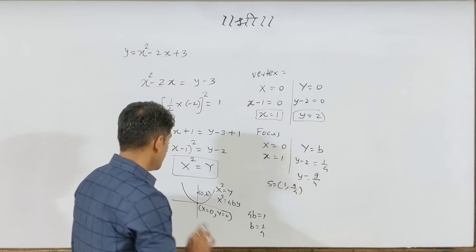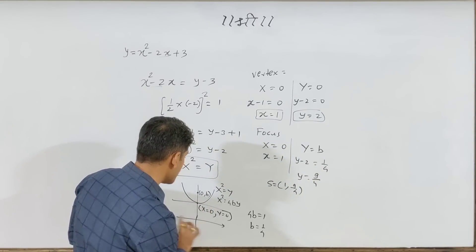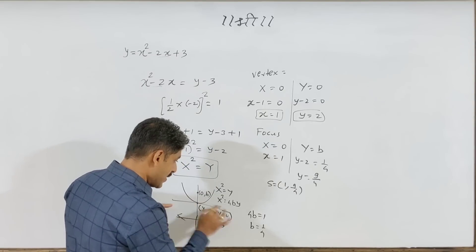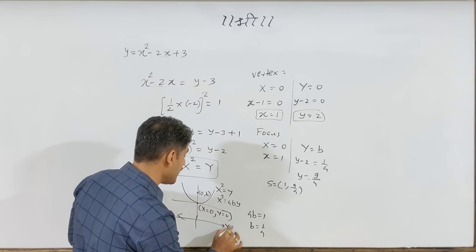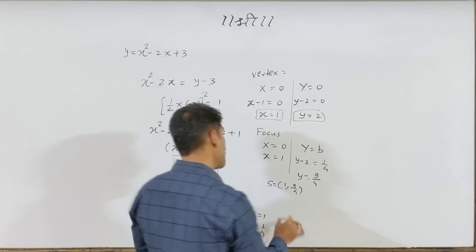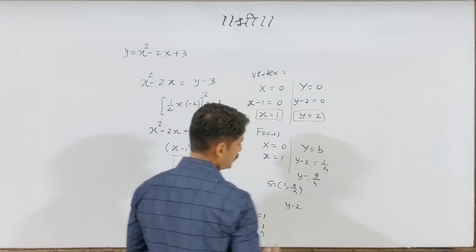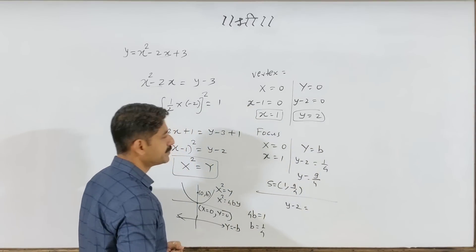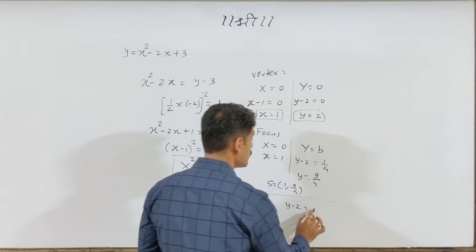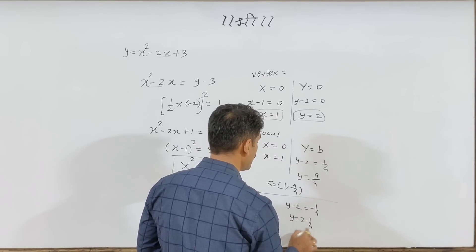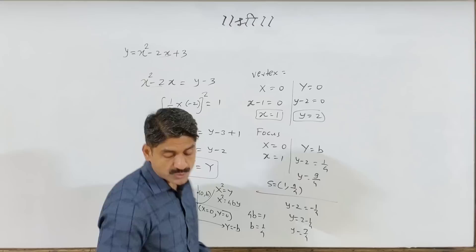For the directrix equation: the directrix is parallel to the x-axis. Capital Y equals minus b, so Y minus 2 equals minus 1/4, giving y equals 2 minus 1/4, which is 7/4. Therefore y equals 7/4 is the directrix equation.